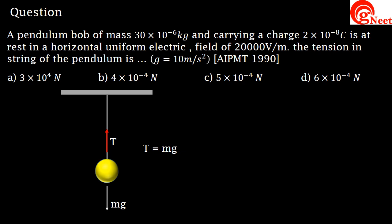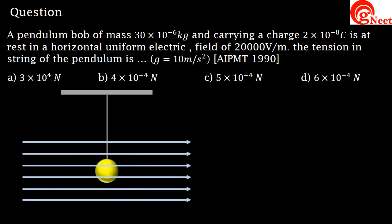Now let's apply the electric field. The positively charged bob experiences an electric force Eq in the direction of the electric field, along with the downward gravitational force. The bob follows a circular path until the resultant force on it becomes zero.